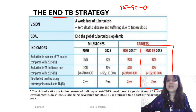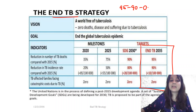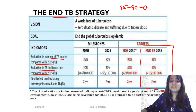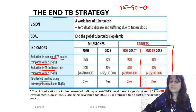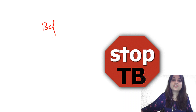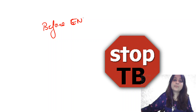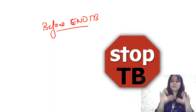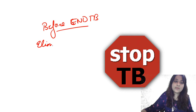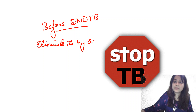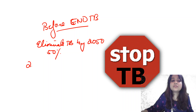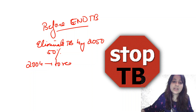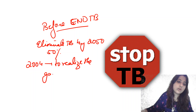We must know the End TB targets: 95% reduction in number of TB deaths compared with 2015, 90% reduction in TB incidence, and 0 TB-affected families facing catastrophic costs. Before End TB, we had the Stop TB initiative. Stop TB aimed to eliminate TB by 2050, with a 50% reduction in deaths. Stop TB was launched in 2004 to realize the goals of MDG, which was till 2015.